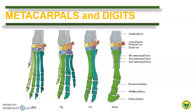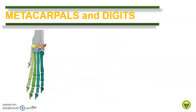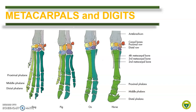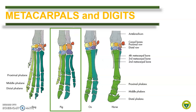Now let us compare the metacarpal and digital bones. As a default, there are five metacarpal bones. In dogs, all five metacarpal bones are present. The first metacarpal bone has only two digital bones, while the rest have three digital bones named as proximal, middle, and distal phalanx. In pigs, only four metacarpal bones are present — the first metacarpal bone is missing. The third and fourth metacarpal bones are well developed while the second and fifth are reduced. All present metacarpal bones bear three digital bones.